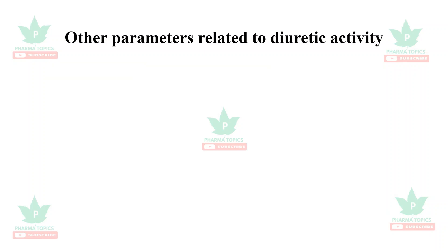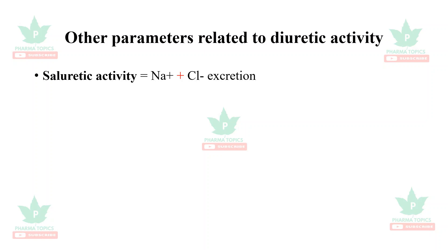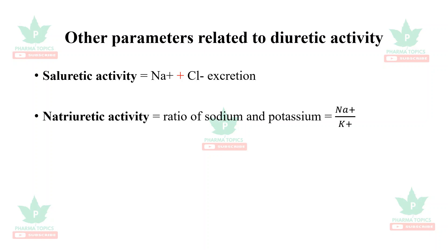Other parameters related to diuretic activity include saluretic activity, where we measure sodium and chloride excretion in the urine, and natriuretic activity, which relates to sodium excretion.